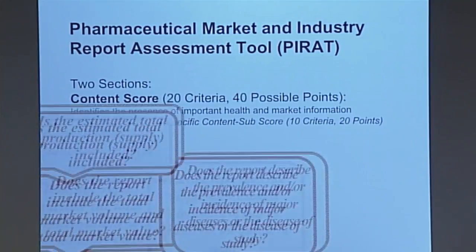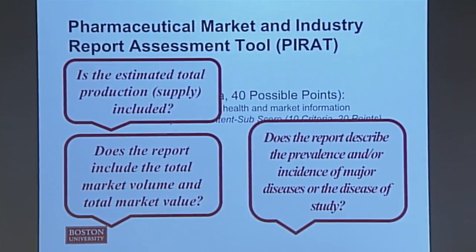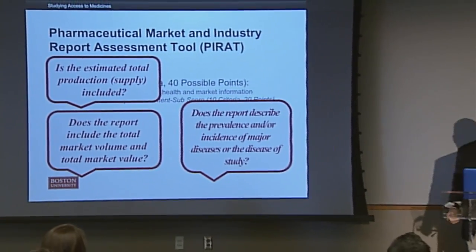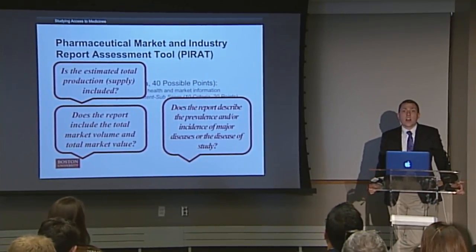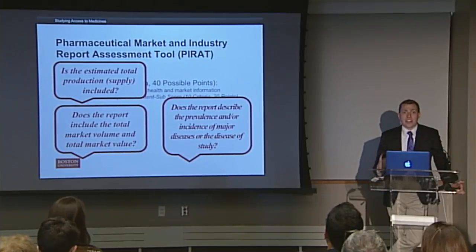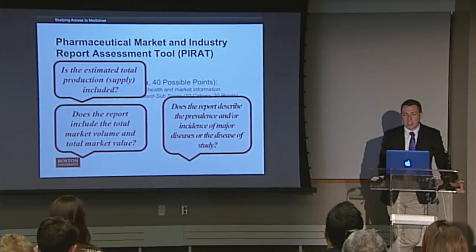What does that mean? Does the report include the total market volume and market value? Knowing both the amount of pharmaceutical by volume and the value helps you calculate how much pharmaceutical is really in the market and whether it's enough for those people that need it. Does the report describe the prevalence and/or incidence of major diseases? When you're looking at diabetes, you really want to know how many people there are with diabetes — not only the prevalence and incidence, but the population — so we can see whether there is enough insulin or metformin or other diabetes products to serve that market. One of the product-specific criteria is whether the estimated total production or supply is included, so you really know how much there is and whether it can serve the market. There's a selection of three or four from the 30 possible criteria — just a little taste.